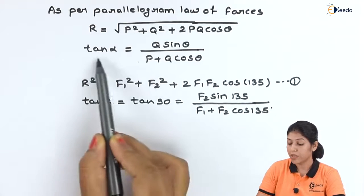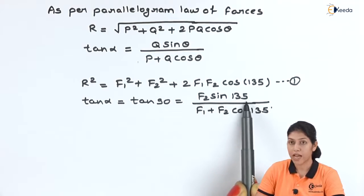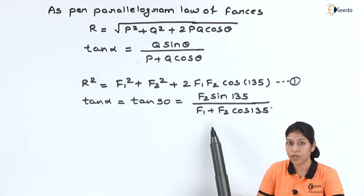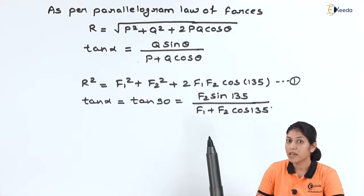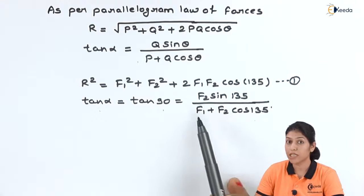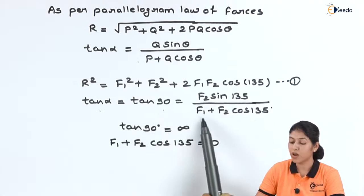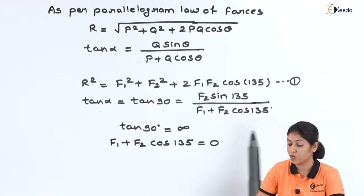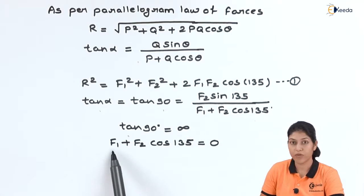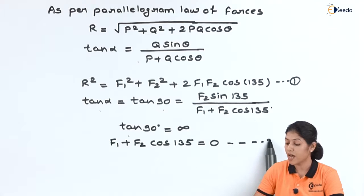Applying the angle of inclination equation, tan α equals F2 sin135° divided by F1 plus F2 cos135°. We know from the diagram that the angle of the resultant with the horizontal surface is 90°. So tan 90° equals infinity, which means the denominator must equal zero: F1 plus F2 cos135° equals 0. We take this as equation 2.